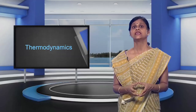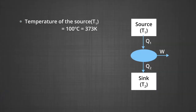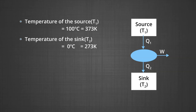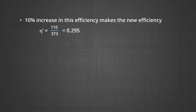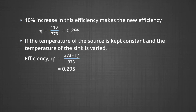The source temperature T₁ = 100°C = 373 K; the sink temperature T₂ = 0°C = 273 K. Efficiency of the Carnot engine = (T₁ − T₂)/T₁ = 100/373 ≈ 0.27. A 10% increase in efficiency gives the new efficiency as 110/373 ≈ 0.295.